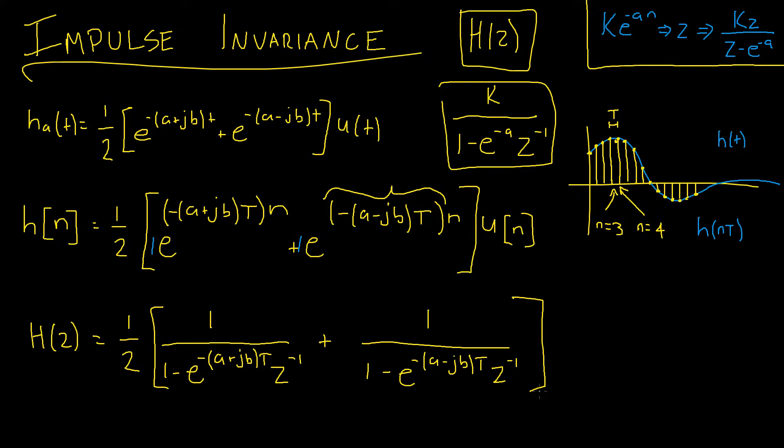Okay and that is it, that is our whole impulse invariance question done. Now if you wanted to, you could distribute this one half just to get rid of the brackets, however the equation is correct as it is.